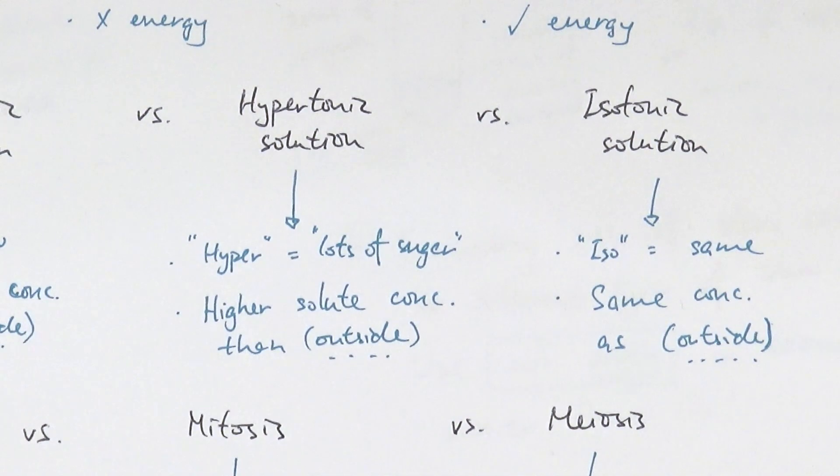Isotonic solution is relatively straightforward. ISO means the same. So meaning that if the cell is in an isotonic solution, then the solution around it has the same concentration as inside the cell, or the cytoplasm is of the same concentration as outside the cell. So again it depends on where the solution is, inside or out of the cell.